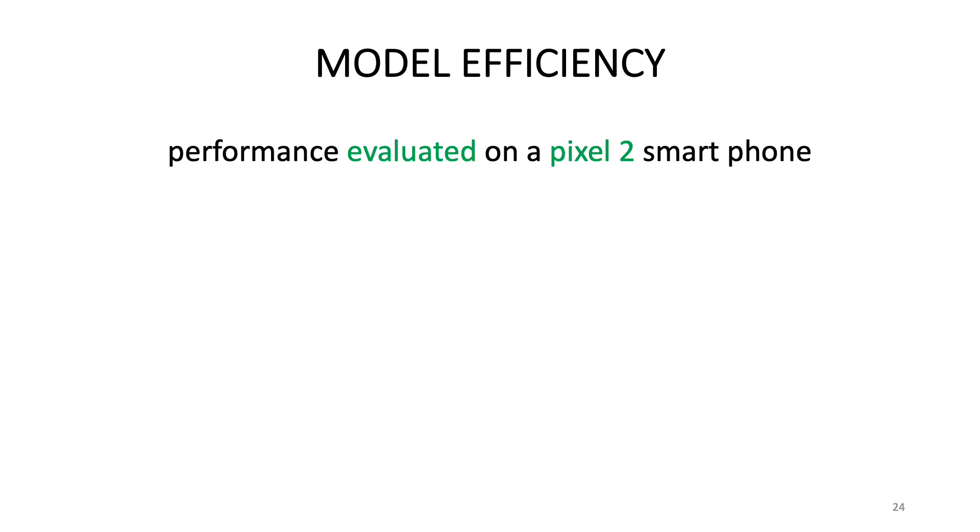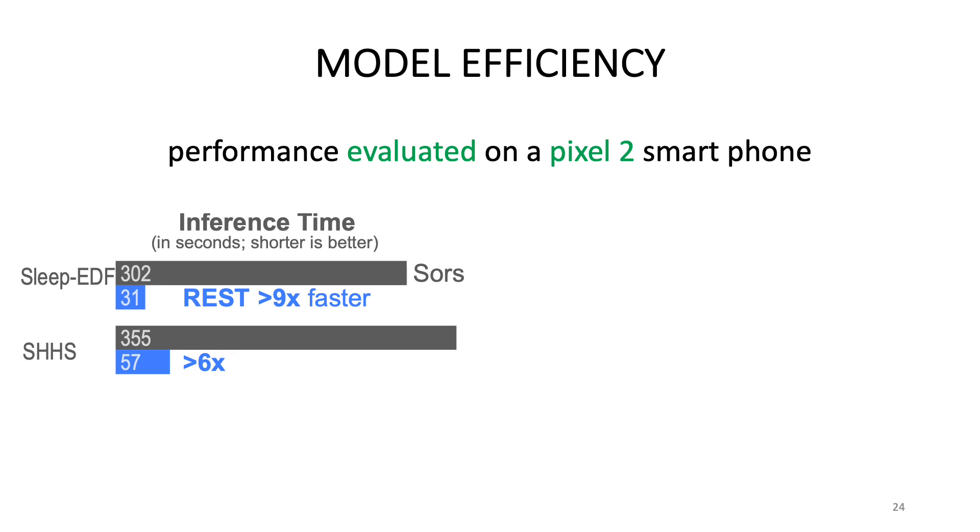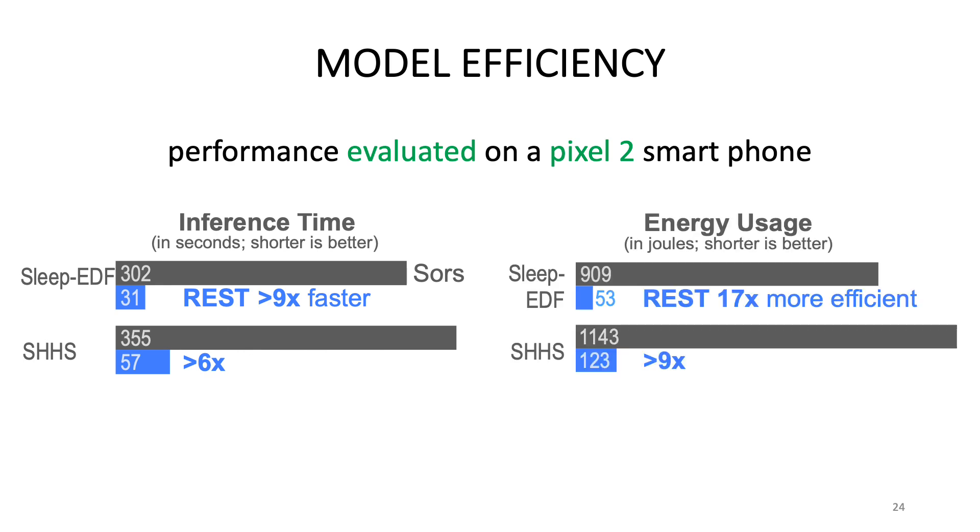Next, let's discuss about the efficiency of the model obtained through REST. We evaluate our performance on a Pixel 2 smartphone. On the left, we show the inference time taken to predict a hypnogram. On the SLEEP-EDF dataset, REST can produce the hypnogram 9 times faster. On the other dataset, the REST model can perform inference up to 6 times faster. In terms of energy consumption, REST model is 17 times more efficient on the SLEEP-EDF dataset and more than 10 times more efficient on the SHHS dataset. In summary, REST produces models that are faster and efficient than other methods.